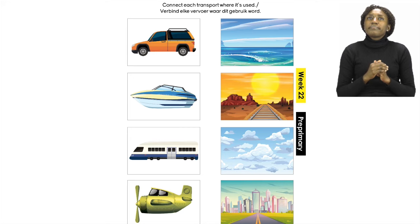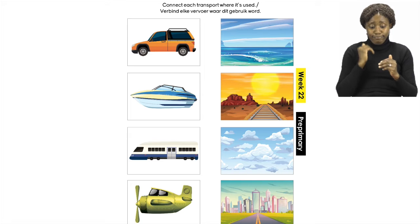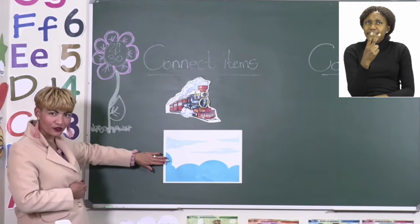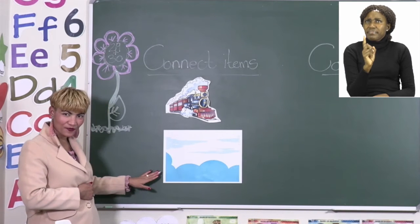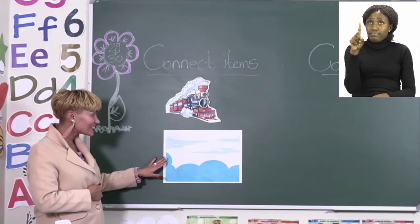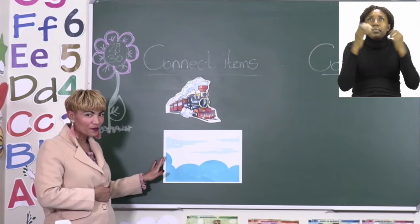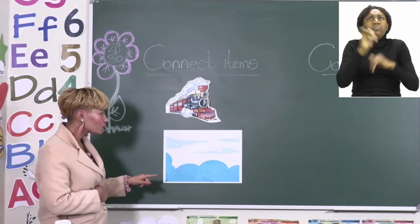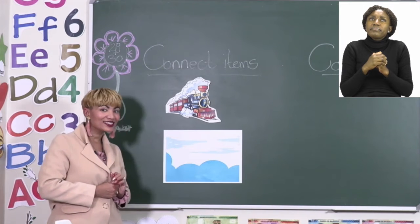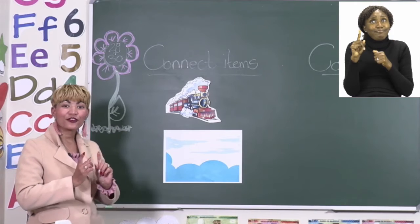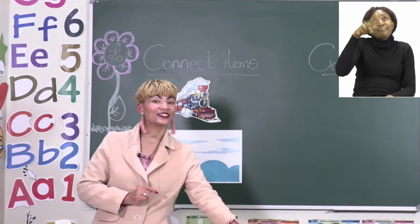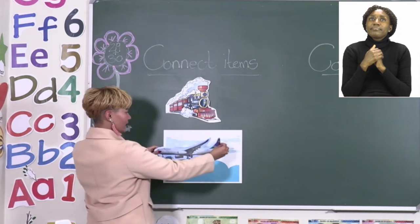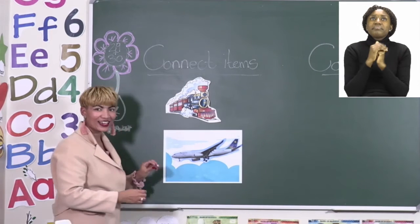Now let's find the next one. Have a look at the second picture on the board. What do you see here? That's right everyone, this is a picture of the clouds. What transport item do you think will be used to travel in and through the clouds? That's right — if you said an aeroplane, you are absolutely correct. Here I have a picture of an aeroplane, and we are going to paste it over there in the clouds.